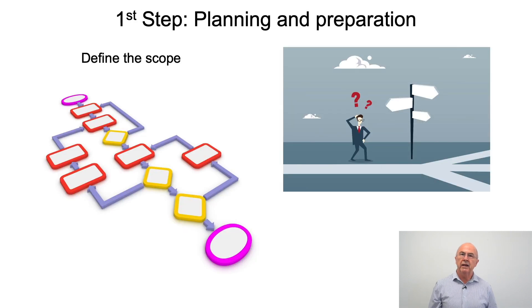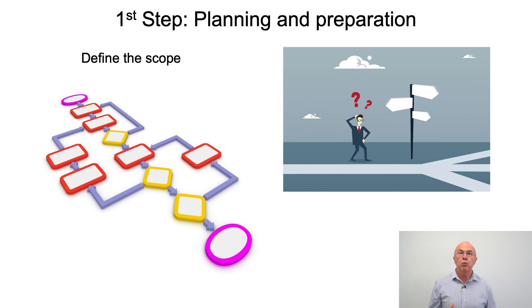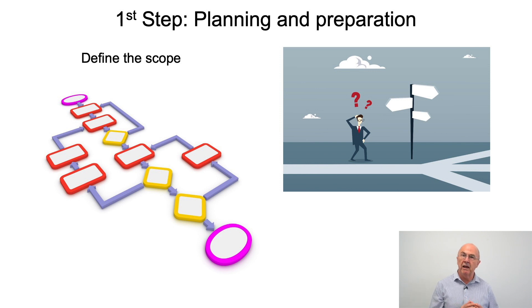The next activity in step one is planning and preparation — defining the scope of the FMEA activity. Traditionally, one of the inputs into FMEA has been the process flow diagram. This is going to be very important in step one because we can use it to decide where we really want to focus. Is there any particular step in the process that we need to do a deep dive FMEA on?